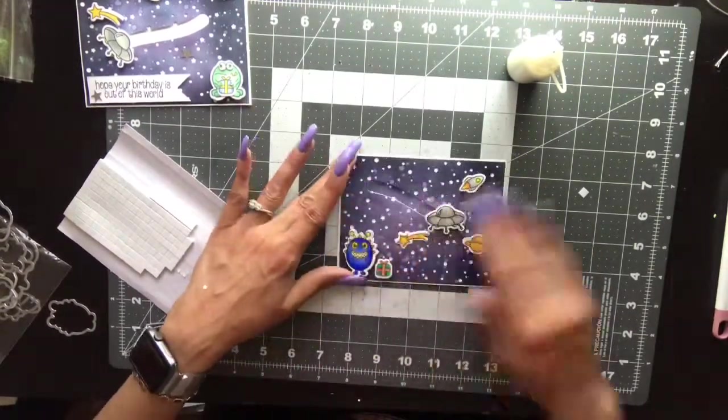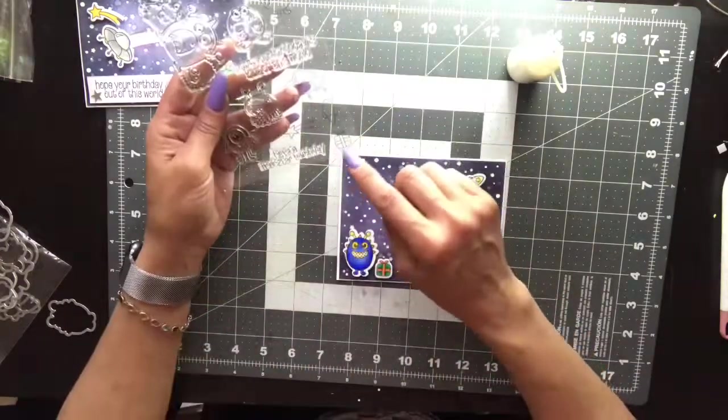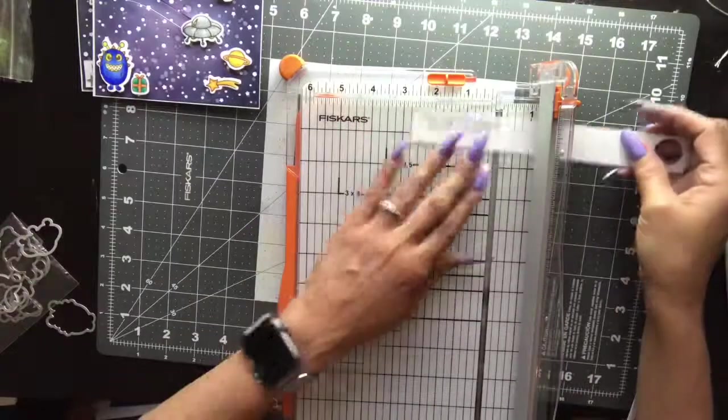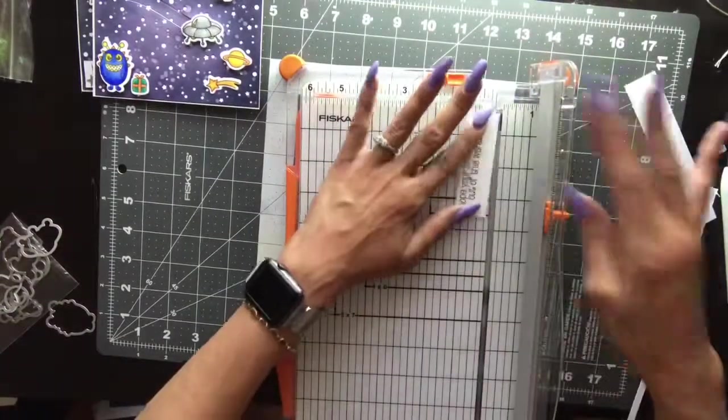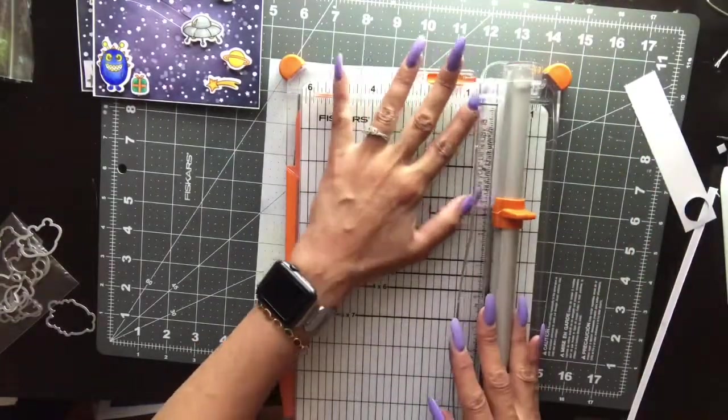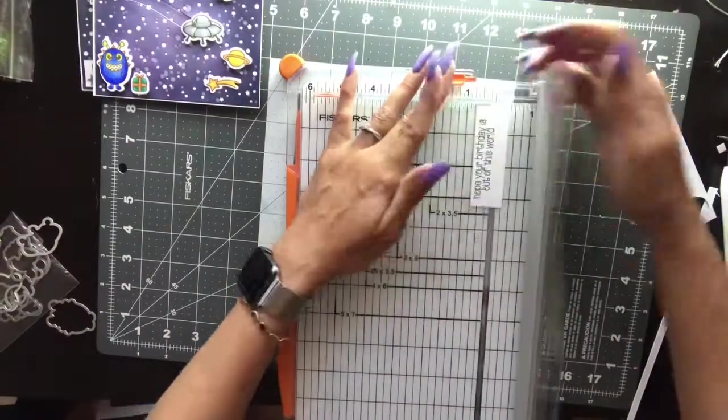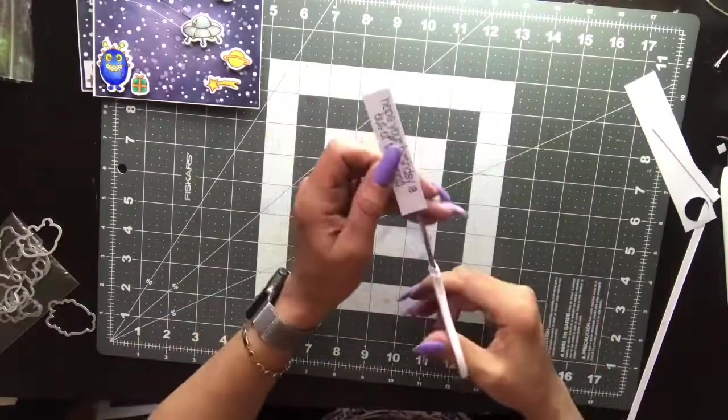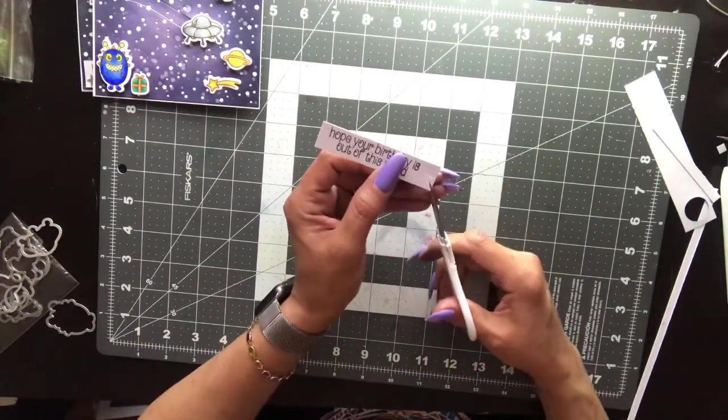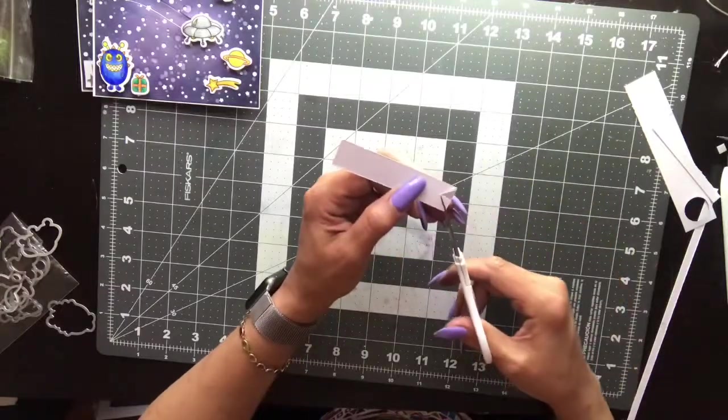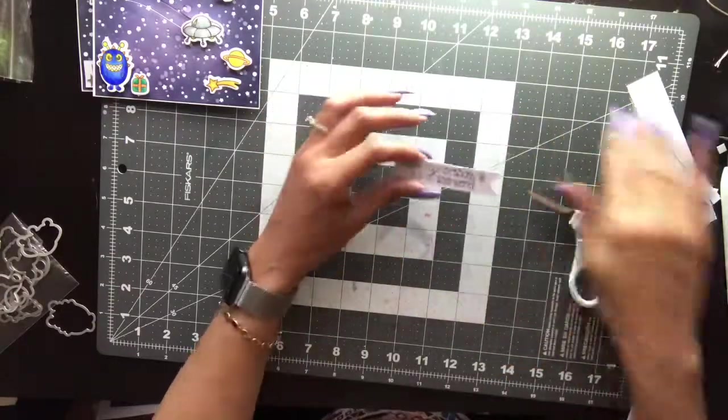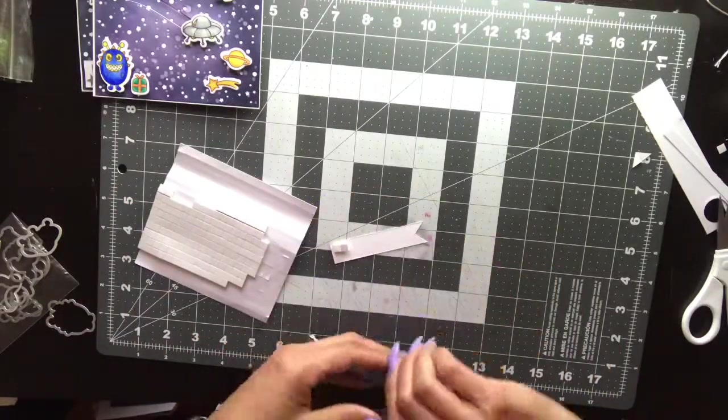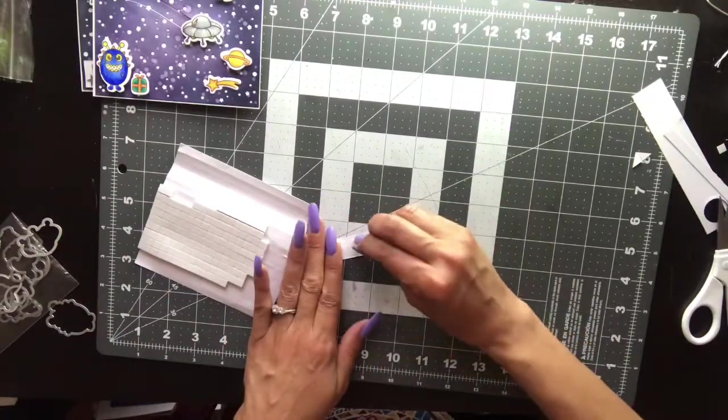I'm triple checking to make sure everything is good and it didn't re-glue itself. I stamped my sentiment 'Hope your birthday is out of this world' on spare cardstock and I'm just trimming it down, giving it a nice little border top, bottom and sides. Then I'm going to grab my scissors and fishtail the end. This is a simple technique, go down the middle and then just from corner into the middle and you get a little fishtail. Pop that up on some foam dots.